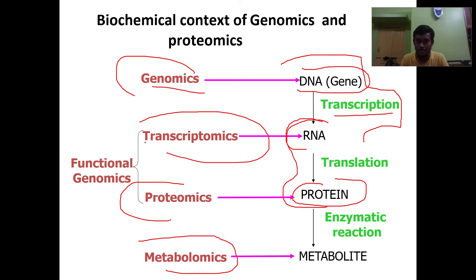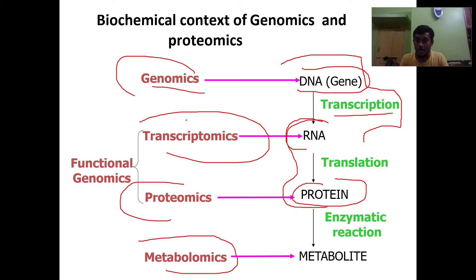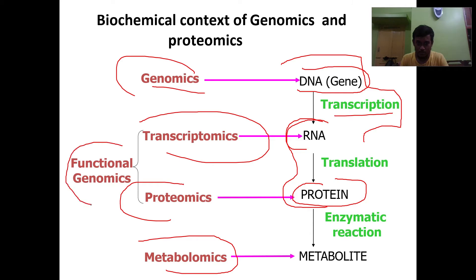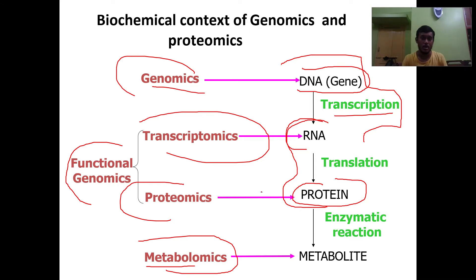Under functional genomics we have transcriptomics — which covers the transcription from DNA to RNA and translation from RNA to proteins. After we get the protein it is used in different ways, which comes under proteomics. So overall, functional genomics consists of transcriptomics and proteomics. Later we have a section known as metabolomics, which deals with metabolites that are utilized by different organisms.